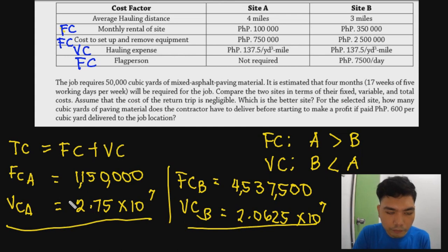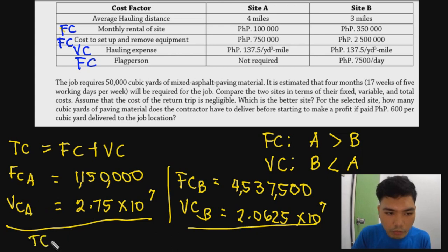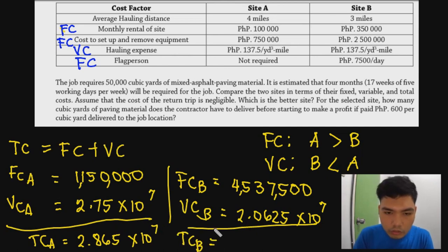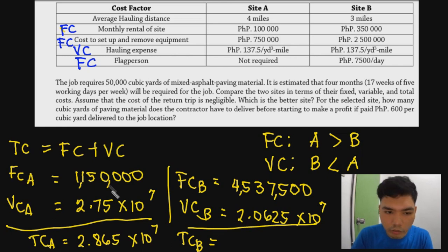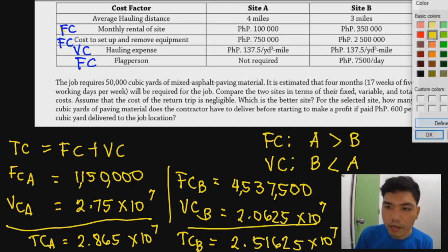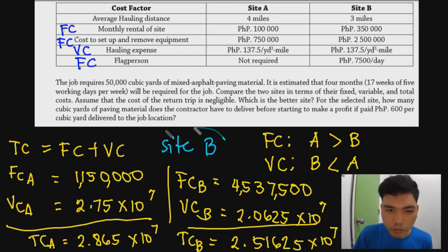Site B is the better choice. Even though Site A appears cheaper when looking only at individual rates, when you compute everything, Site B wins because its lower variable cost (due to shorter distance) outweighs its higher fixed costs. The difference is approximately 3 million pesos in favor of Site B.